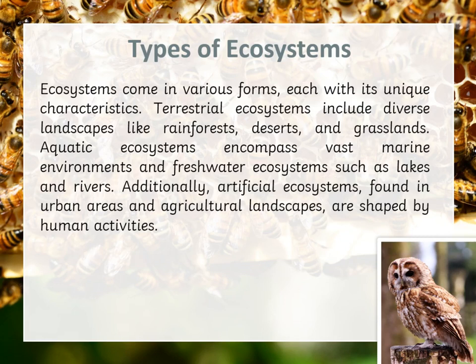Moving to the types of ecosystems — ecosystems come in various forms, each with its unique characteristics. We have terrestrial ecosystems, which include diverse landscapes like rainforests, deserts and grasslands. We have aquatic ecosystems, which encompass vast marine environments and freshwater ecosystems such as lakes and rivers. Additionally, we have artificial ecosystems, which are found in urban areas and agricultural landscapes shaped by human activities.